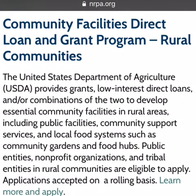The USDA Community Facilities Direct Loan and Grant Program for rural communities provides grants, low-interest direct loans, or a combination of both to develop essential community facilities in rural areas, including public facilities, community support services, and local food systems such as community gardens and food hubs. Public entities, non-profit organizations, and tribal entities in rural communities are eligible to apply. Applications are accepted on a rolling basis. Learn more and apply at nrpa.org.